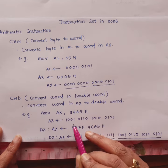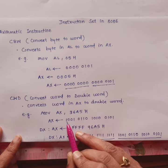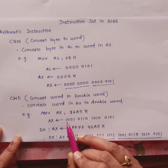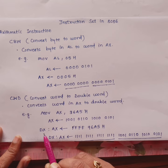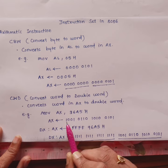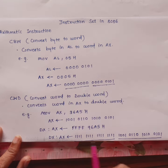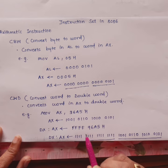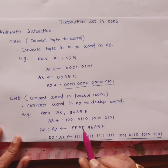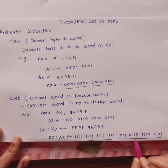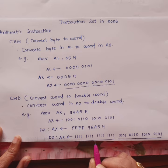If we represent 96A5h in binary, the higher bit is 1, which indicates that this operand is negative. This sign extension is achieved by taking help of the DX register. The value 1 gets copied into the DX register, giving us FFFFh in the DX register, and this is how the word from the AX register is converted to a double word.